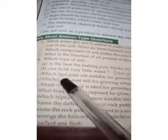Question 5. Which two soils are suitable for growing cereals like wheat and gram? Clayey soil and loamy soil.